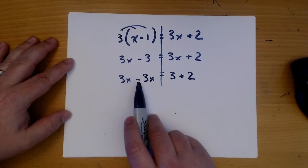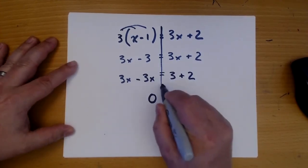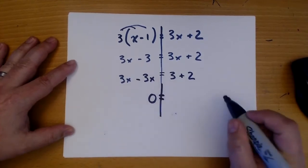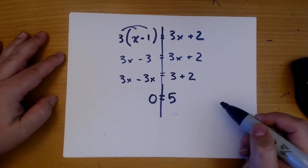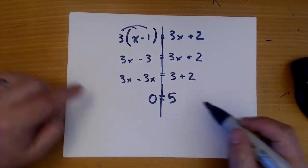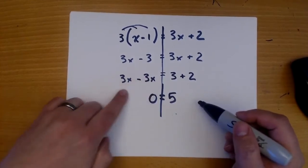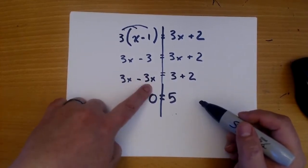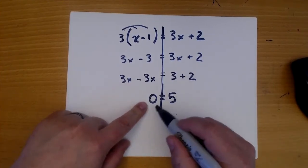Now, 3x minus 3x is 0, and 3 plus 2 is 5. So we don't have any more x's. They all got taken away, and all we have is zero. Now, this is not true.